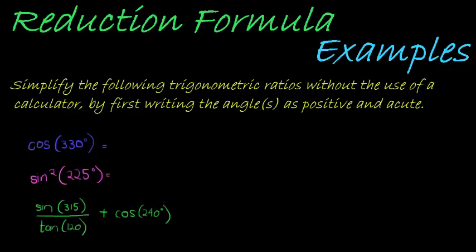Okay, so here we have the more challenging questions, but again you'll see it's really not that bad. Once we have our CAST diagram, that is what I'm going to start with. Actually, let's start by reading the question. Simplify the following trigonometric ratios without the use of a calculator by first writing the angles as positive and acute.